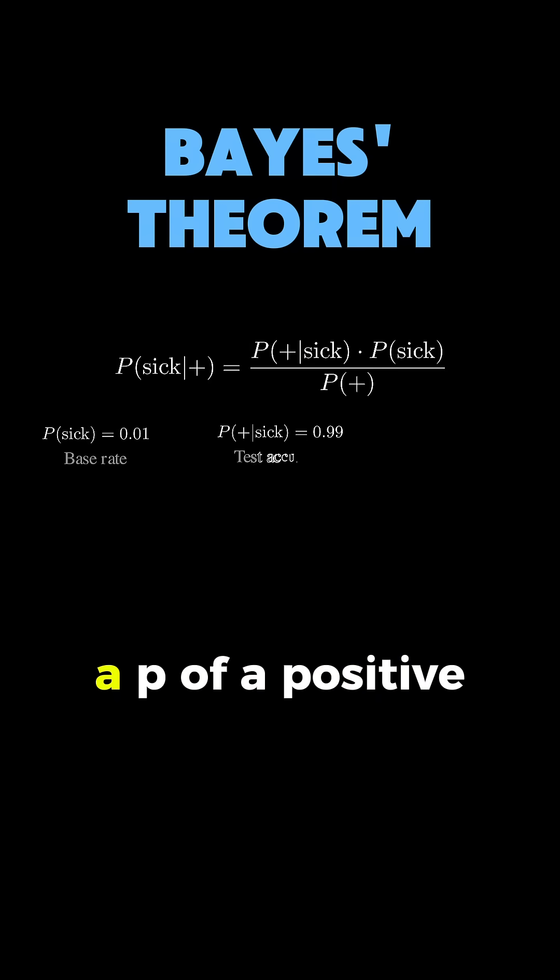Next, we have P(+|sick), which is the likelihood, the test's accuracy for sick people, and that's 99% or 0.99.